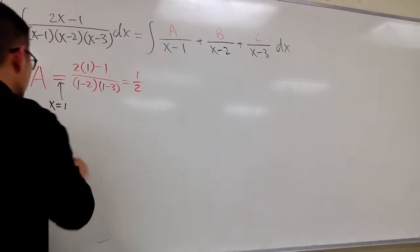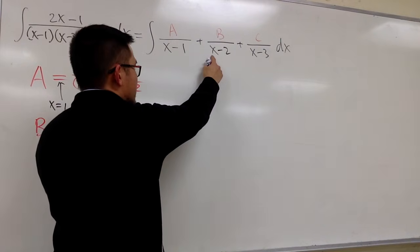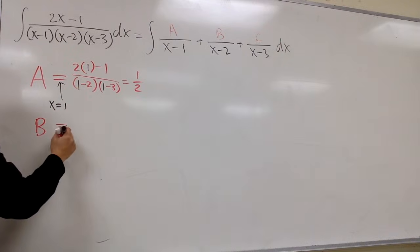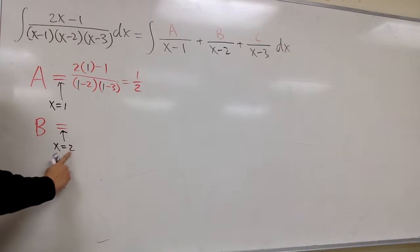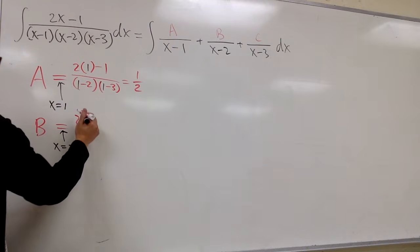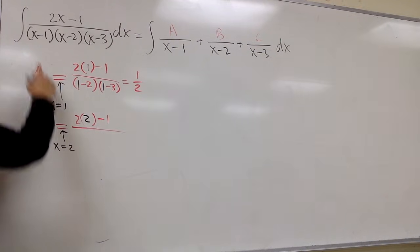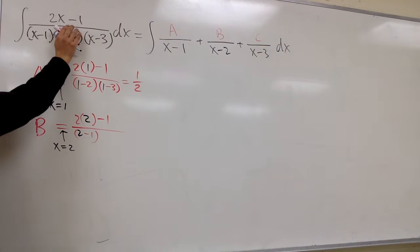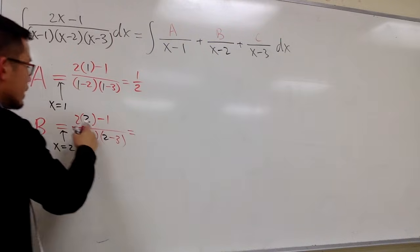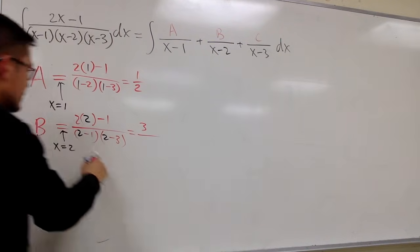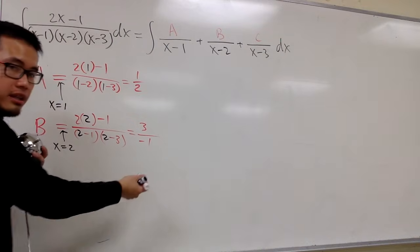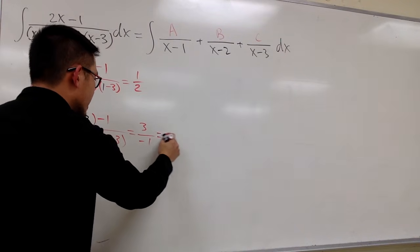Now let's do the same for B. The denominator for B is x minus 2, so I cover that up in the original. To make x minus 2 equal to 0, let x equal 2, and plug 2 into the rest. On top: 2 times 2 minus 1. On the bottom: 2 minus 1, times 2 minus 3. That gives us 3 over 1 times negative 1, which is 3 over negative 1. So B is negative 3.